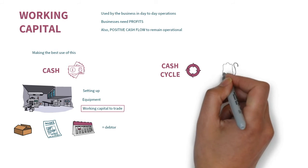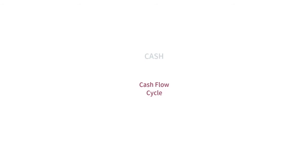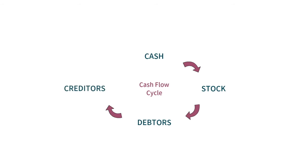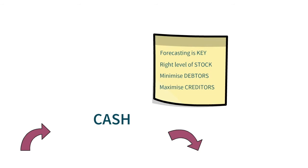Cash flows through a business and is often described as the lifeblood of the business. To best manage the cash in your business, you need to focus on the four key elements of the cash flow cycle: cash both in hand and in the bank, stock, debtors, and creditors. It's essential to manage the level of cash needed to run your business, and cash forecasting is key. This needs to be managed in conjunction with the right level of stock, minimising your debtors — money owed to the business — and maximising your creditors — amounts the business owes to suppliers.